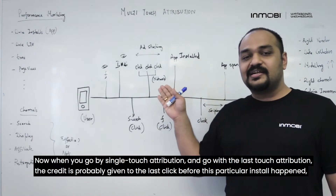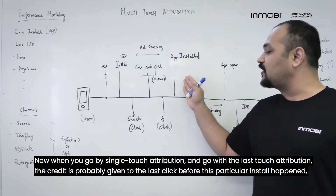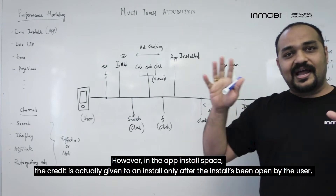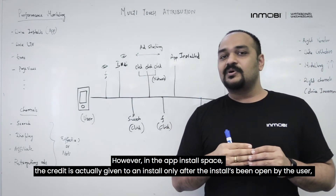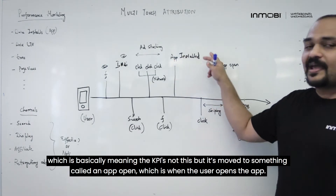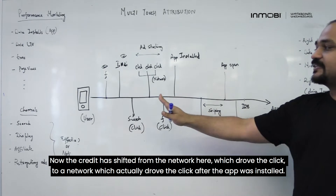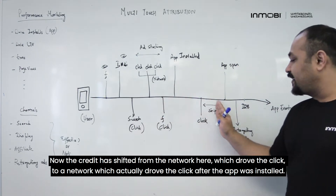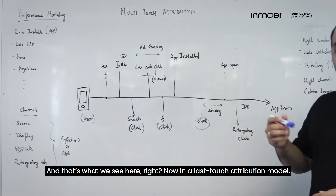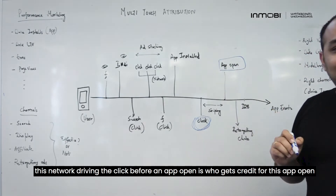He has seen a bunch of ads shown to him by various companies — be it Facebook's view, Inmobi's view, and clicks driven by various ad networks. Finally, he does an install. Now when you go by single-touch attribution and go with last touch, the credit is probably given to the last click before the install happened. However, in the app install space, the credit is actually given only after the install has been opened by the user — meaning the KPI has moved to something called an app open, which is when the user opens the app. The credit shifts from the network that drove the click to the network that drove the click after the app was installed — and in a last-touch model, that network driving the click before an app open is who gets credit.